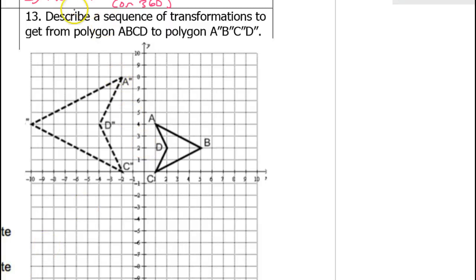Last one. For number 13, we need to describe a sequence of transformations to get from polygon ABCD to polygon A double prime, B double prime, C double prime, D double prime. The new image is definitely twice as big as the original. Notice that the distance from A to C is 4 units, while the distance from A double prime to C double prime is 8. Similarly, it's twice as big horizontally. So I definitely know that we're going to need a dilation by a scale factor of 2. And I think a dilation from the origin will do it.